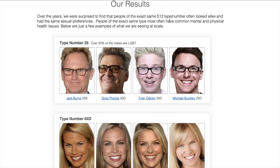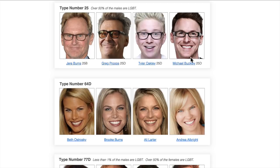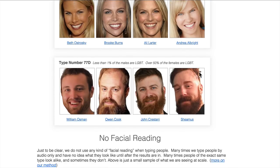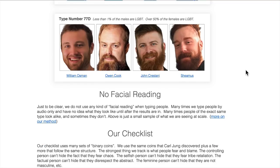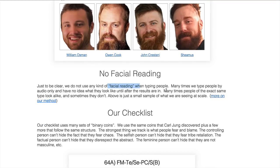What we found by collecting all the data is that people have the exact same type, and we're typing people out of 512, not just 16 types. If they're the exact type out of 512 or even 128, they end up looking alike and have the same sexual preferences, oftentimes health issues and hair, and a whole bunch of interesting genetic stuff. We don't do any type of facial reading; oftentimes we'll type people by audio only.